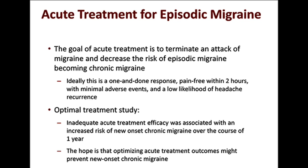Richard Lipton and colleagues did a very important study published in January 2015 which found that inadequate acute treatment efficacy was associated with an increased risk of new onset chronic migraine in episodic migraineurs over the course of a year. Poor acute treatment increased the risk of transformation to daily or near-daily headache. The hope is that if one optimizes acute treatment outcomes, we might be able to prevent new onset chronic migraine during that period of time.